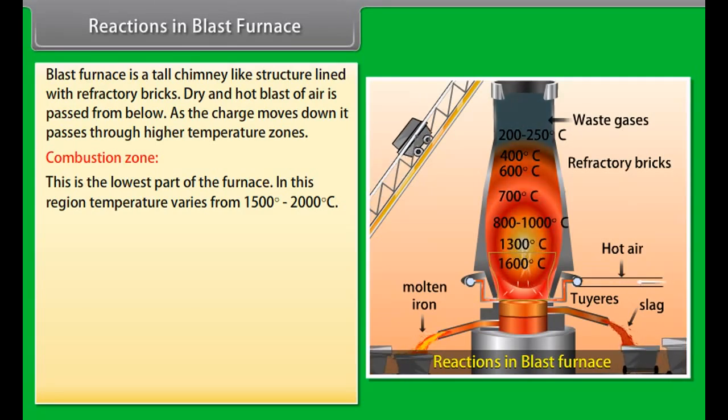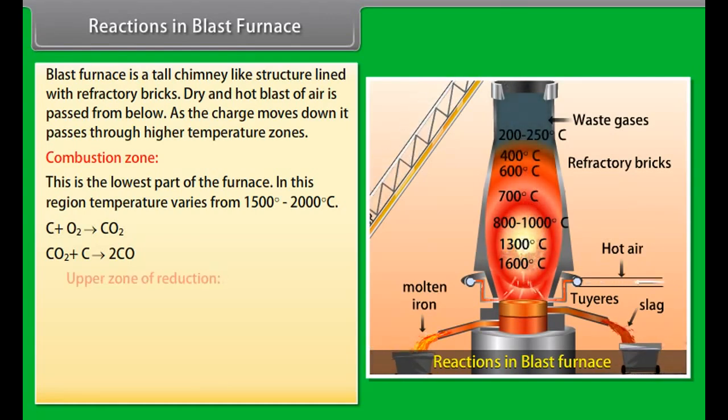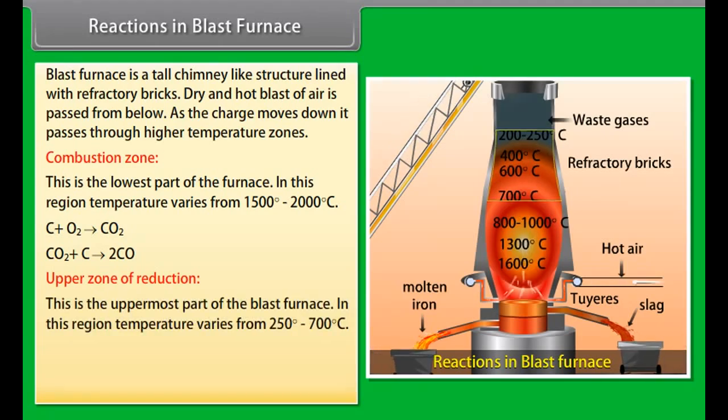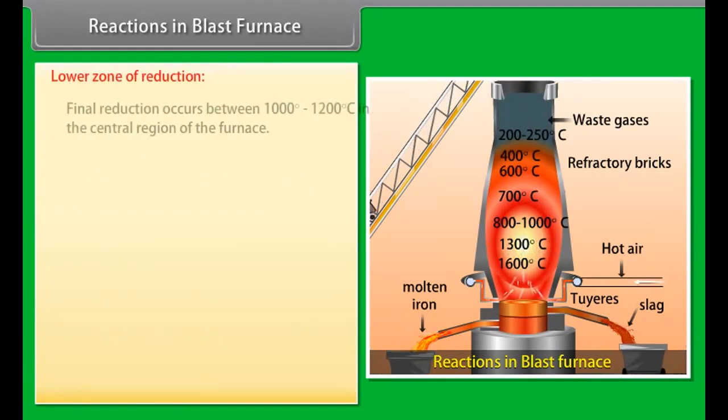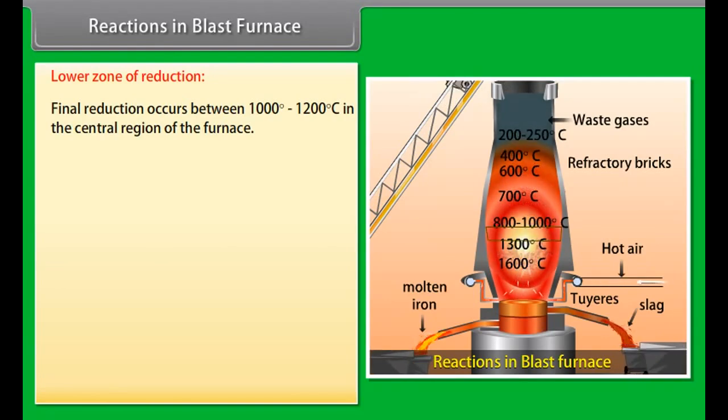Calcination and roasting: Ore is powdered and mixed with some coal and heated strongly in a shallow furnace. By this, moisture is removed, organic matter is oxidized, sulfur and arsenic impurities are removed as volatile oxides, and the ore becomes porous so that the reactions become easier. Smelting: The calcined and roasted ore is mixed with limestone and coke in the ratio of 8:1:4 and introduced into a blast furnace.